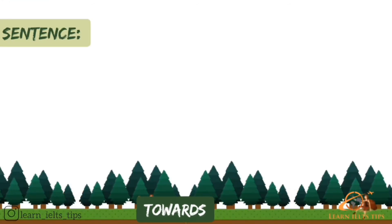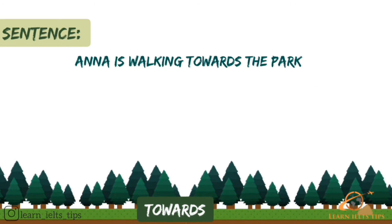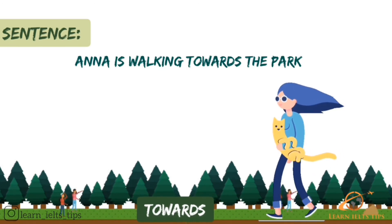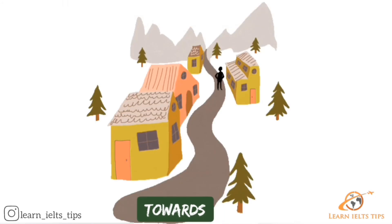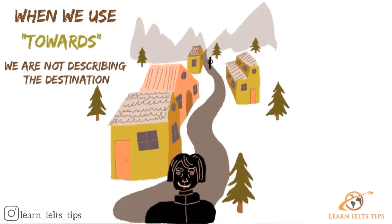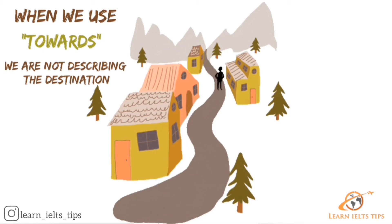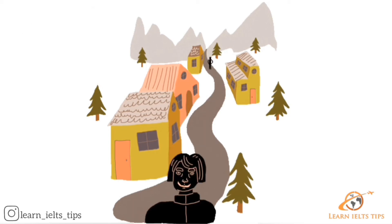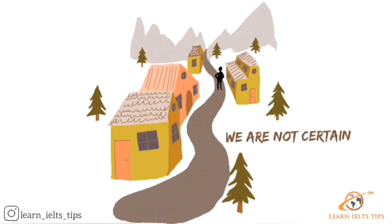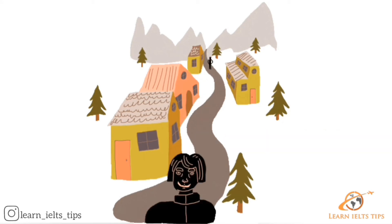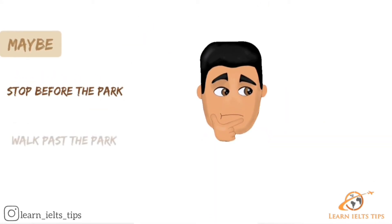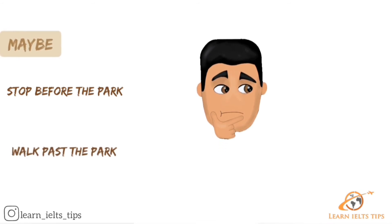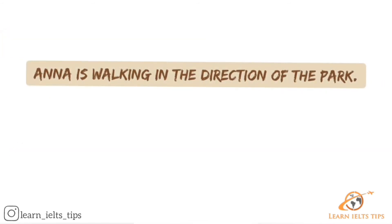Let's look at a sentence. Ana is walking towards the park. In this sentence, towards the park means in the direction of the park. When we use towards, we are not describing the destination. Maybe the destination is the park, but we are not certain. Maybe Ana will stop before the park, or maybe Ana will walk past the park. We only know that Ana is walking in the direction of the park.